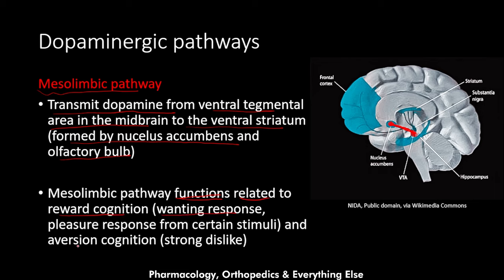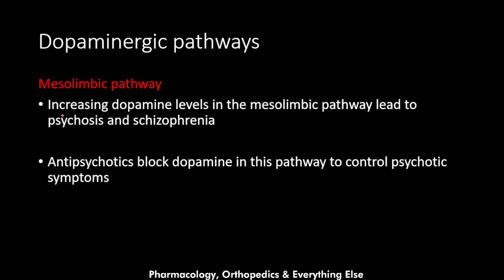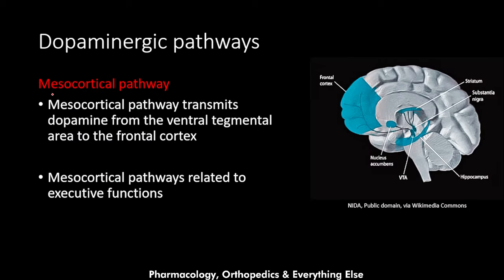The mesolimbic pathway mediates the wanting response and pleasure response from certain stimuli, as well as aversion cognition — the strong dislike response. Increasing dopamine levels in the mesolimbic pathway leads to psychosis and schizophrenia. When dopamine levels exceed their normal levels in this pathway, the patient starts having psychosis symptoms. Antipsychotics target this pathway by blocking dopamine to control the psychotic symptoms.